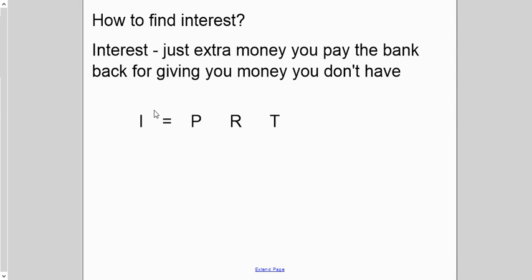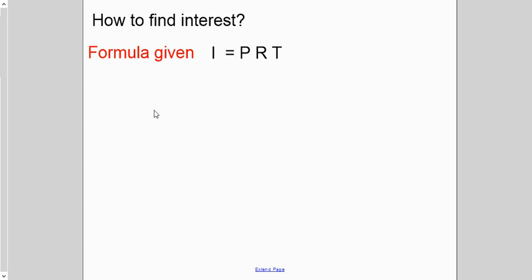And we're going to be looking at simple interest and it's I equals PRT, that's our formula. The I stands for interest, that's the amount that the lender is going to be charging you. It could also be the amount that you've earned if you let it sit in their bank in a savings account.